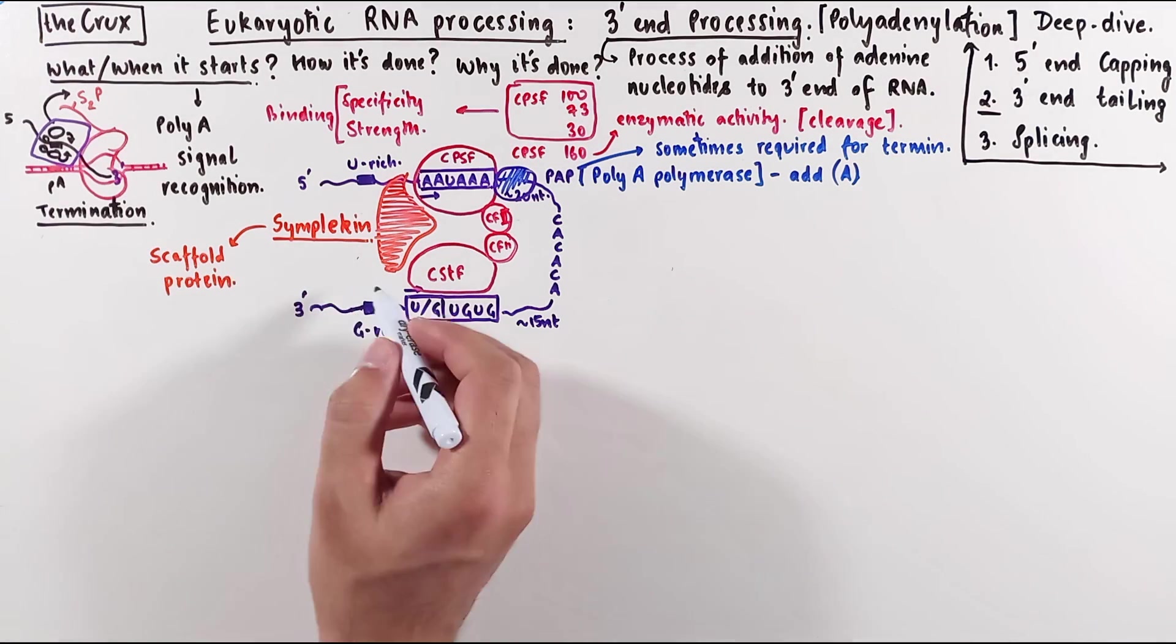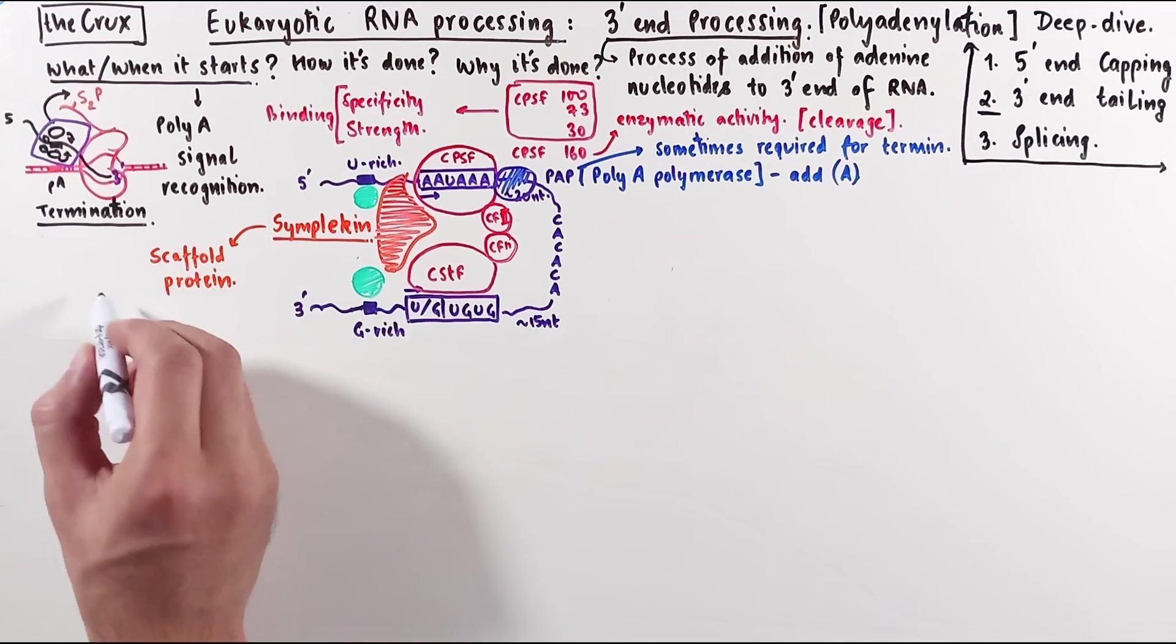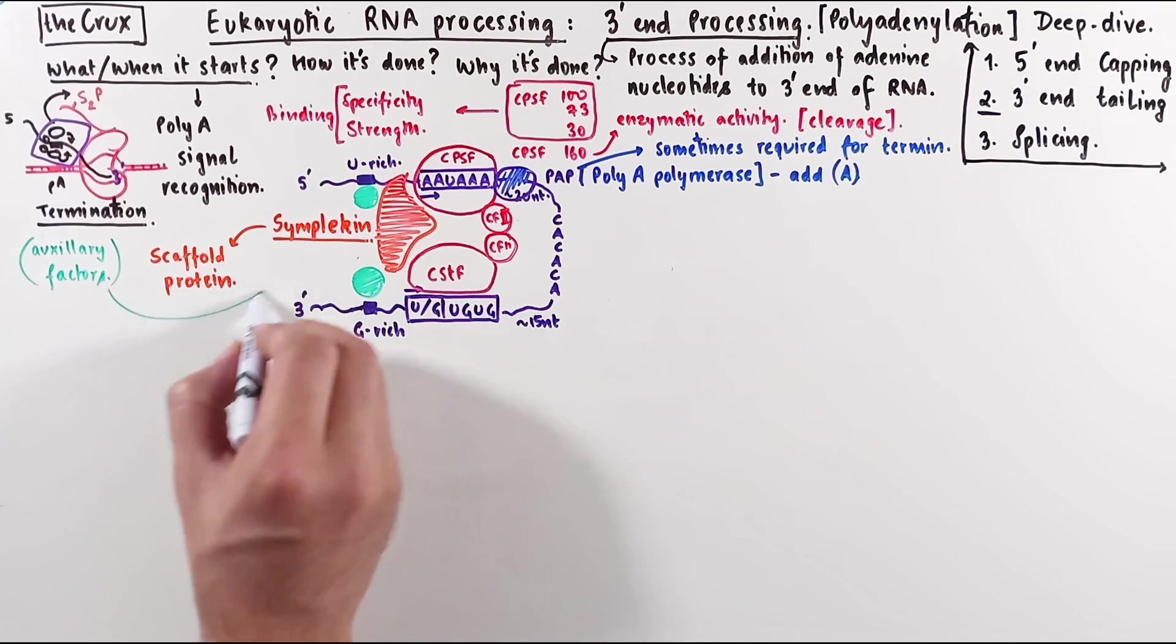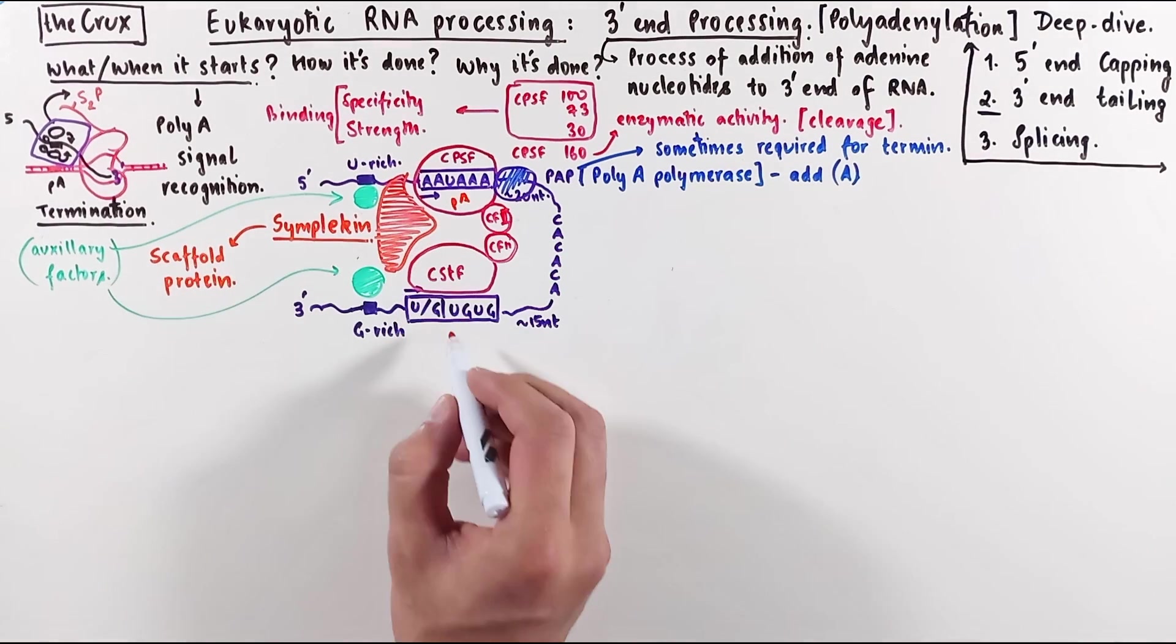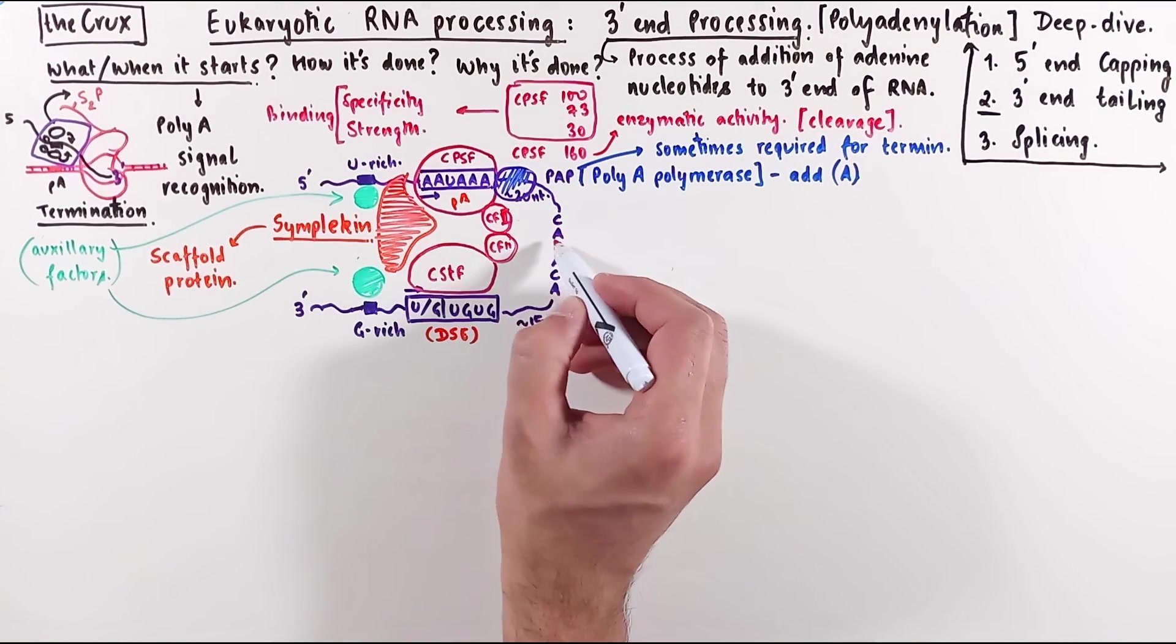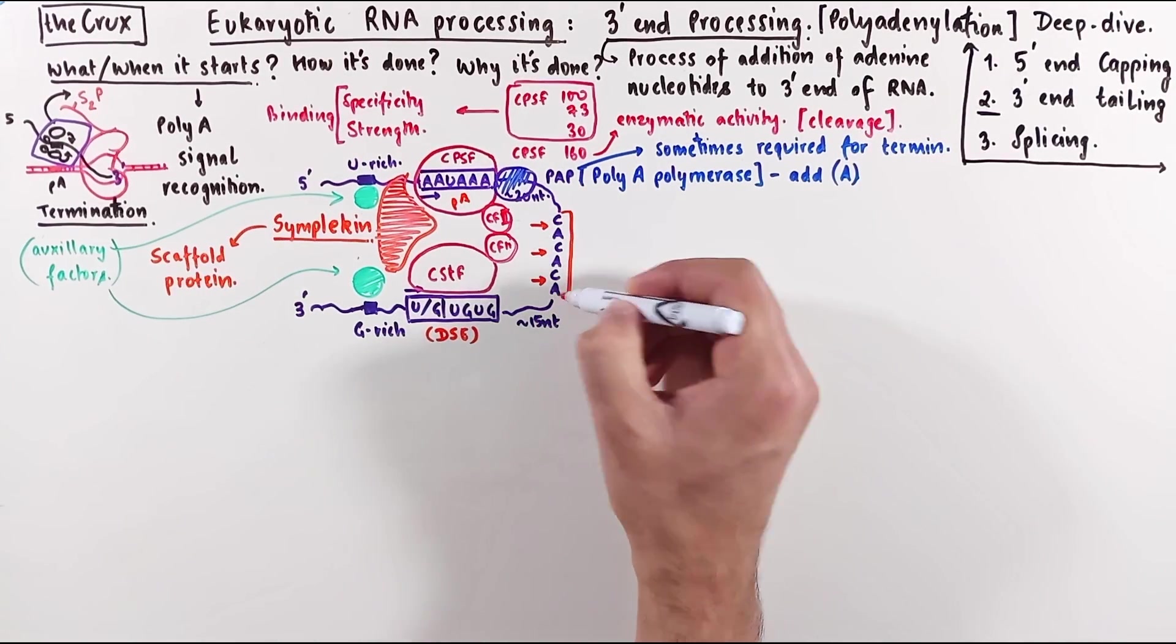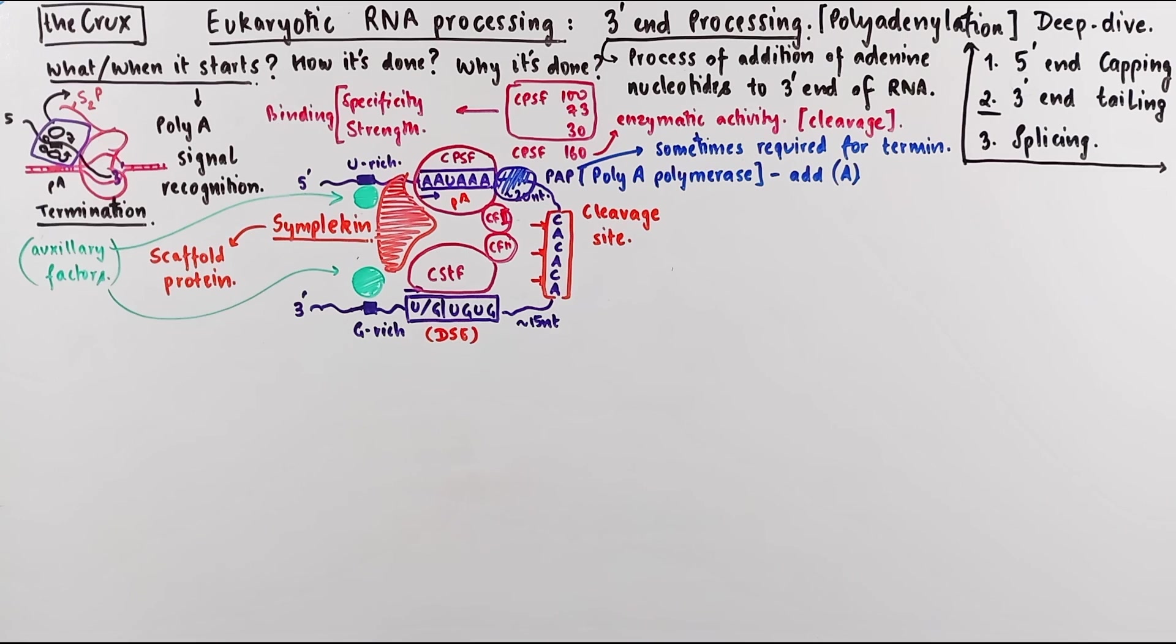In addition to all of these, sometimes these G-rich and U-rich sequences here can also be bound by some extra or auxiliary proteins. These generally don't have an essential function, but they may sometimes have a regulatory function. So after this complex assembles at the polyA signal and this GU-rich region, also known as the downstream sequence element, the CPSF-160, with the help of cleavage factors and CSTF, make a cut in the C-A dinucleotide region. This cut can be anywhere in this region between cytosine and adenine. And therefore this region where the cut is made is called the RNA cleavage site.